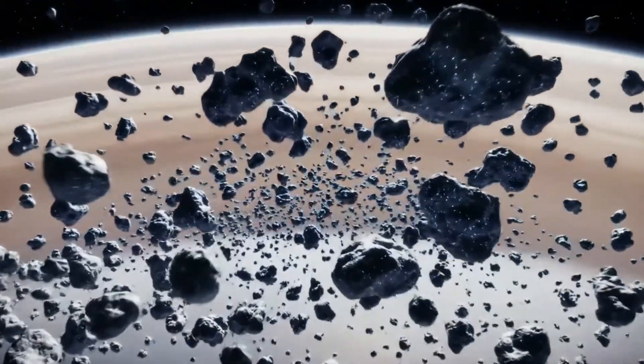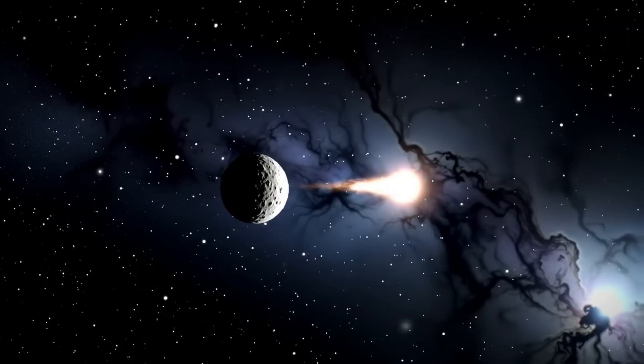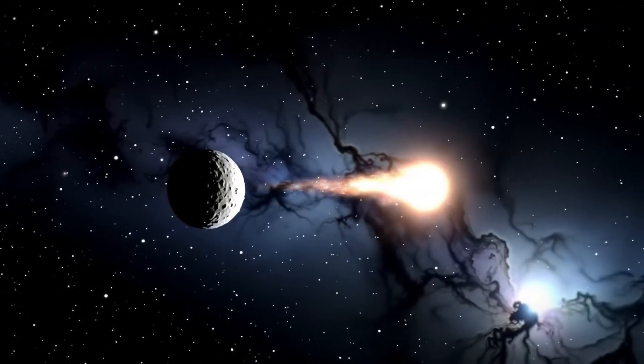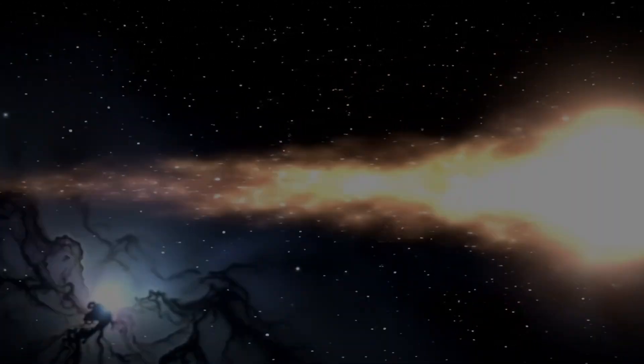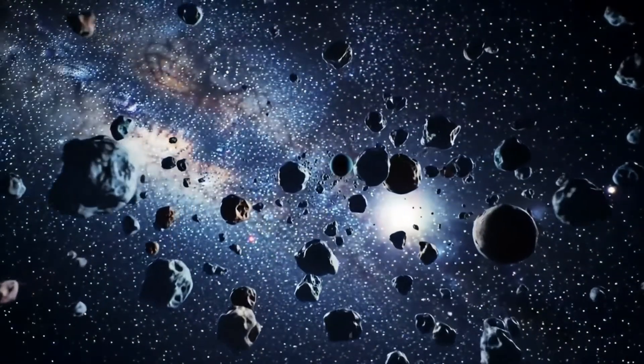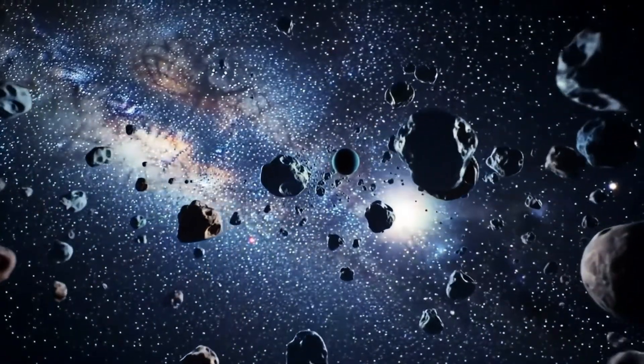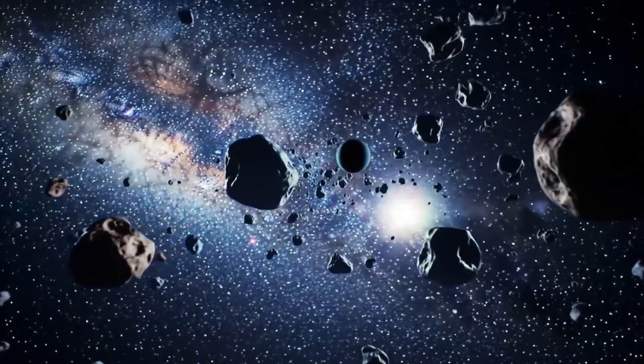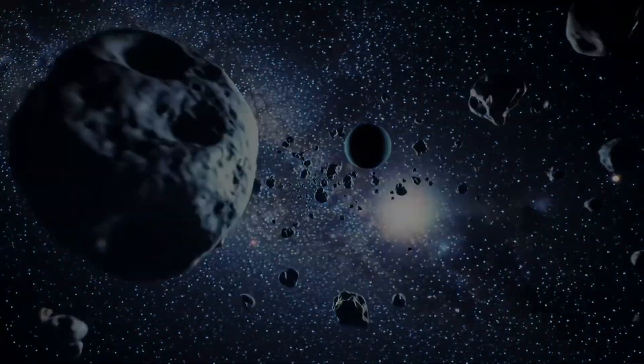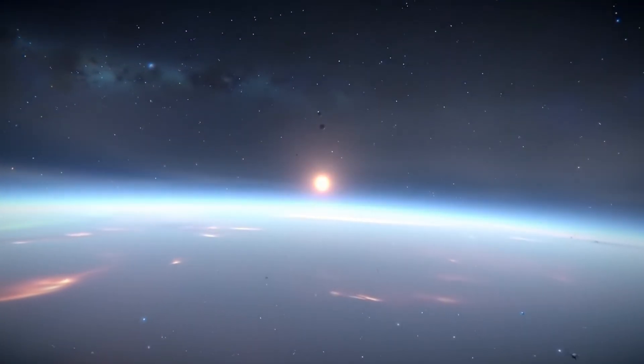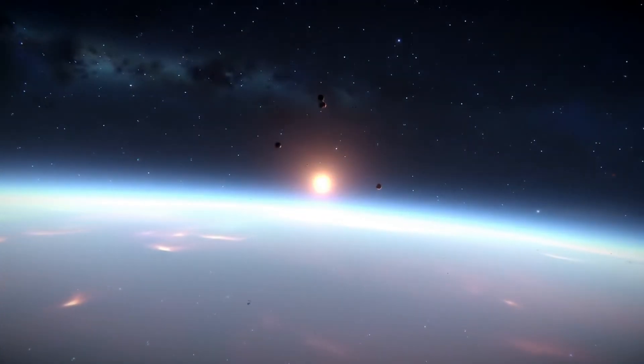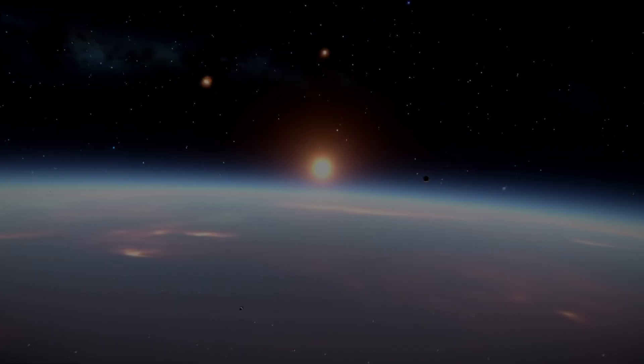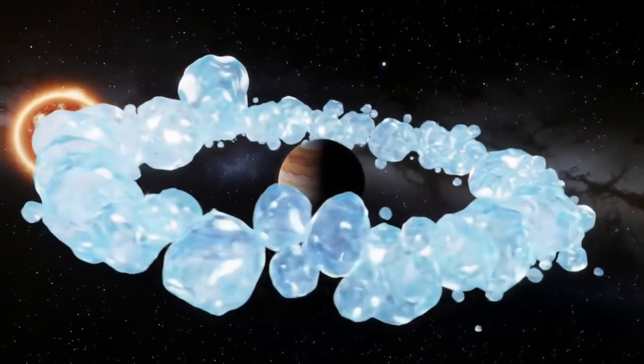Our solar system sits in the Orion Arm, a smaller spiral arm, about 27,000 light-years from the galactic center. If you look up or down from the ecliptic, you're peering through the Milky Way's disk toward its halo, a sparse, spherical region of old stars, globular clusters, and dark matter. Data from the Gaia spacecraft shows the halo stretches far above and below the galaxy's plane, giving us a sense of the 3D structure surrounding us.